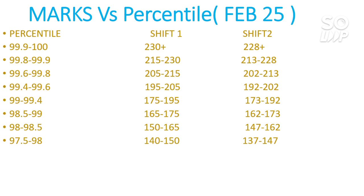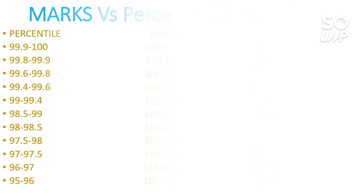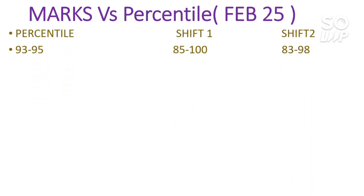For February 25th continuing: 97.5 to 98 percentile needs 140–150 marks for Shift 1, three marks less for Shift 2. For 97 to 97.5 it's 130–140, three marks less for Shift 2. For 96 to 97 it's 115–130, two to three marks less for Shift 2. For 95 to 96 percentile Shift 1 needs 100–115 marks, Shift 2 needs 98–112 marks. If your marks are not listed here, comment them down and I'll provide your expected percentile.